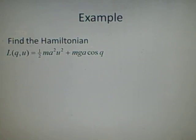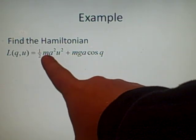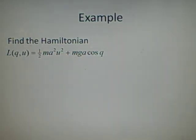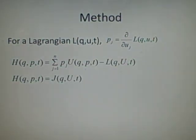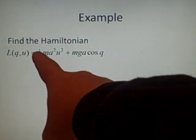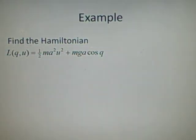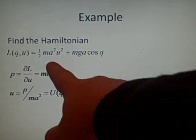Right now, to find the Hamiltonian of this equation here, here's the Lagrangian, which is ½ma²u² + mga cos q. Now the first thing we have to do is find this conjugate momenta, which is ∂/∂u, so this will cancel out, and you'll be left with ma²u.